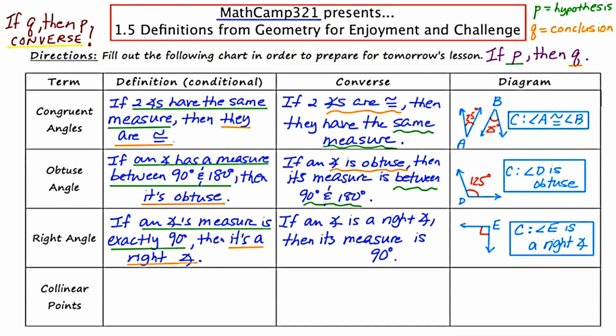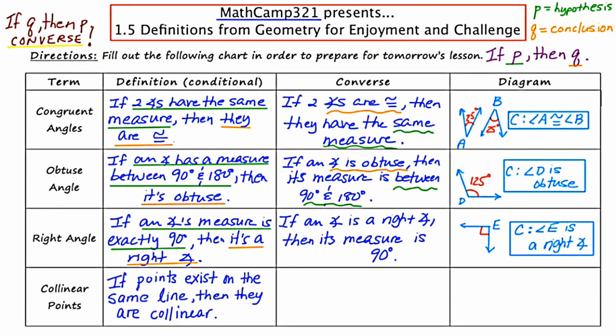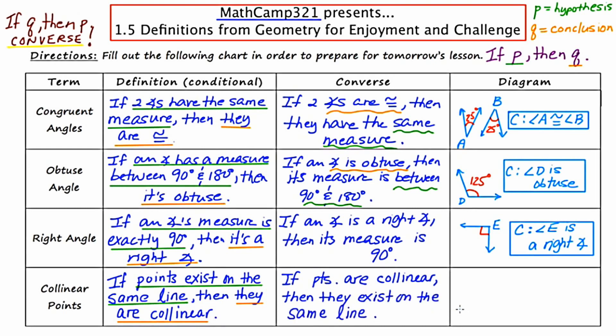Finally, we have collinear points. The conditional is: if points exist on the same line, then they are collinear. I'll identify the hypothesis in green and the conclusion in orange. Try to formulate the converse yourself — pause the video and resume to check. The converse would read: if points are collinear, then they exist on the same line. For the illustration, suppose you saw points M, N, and P all on the same line — you can conclude that they are collinear.